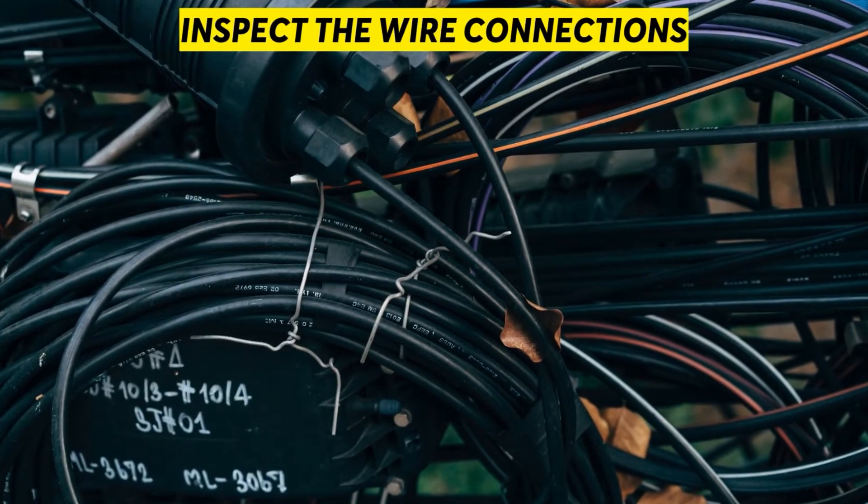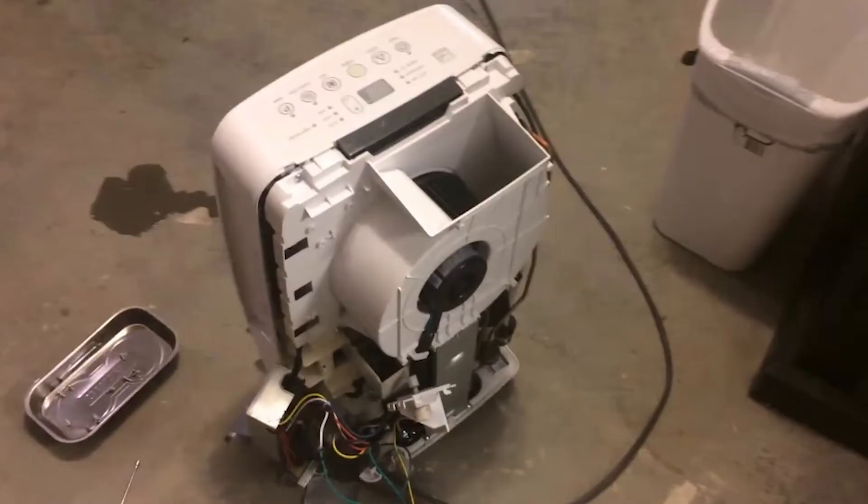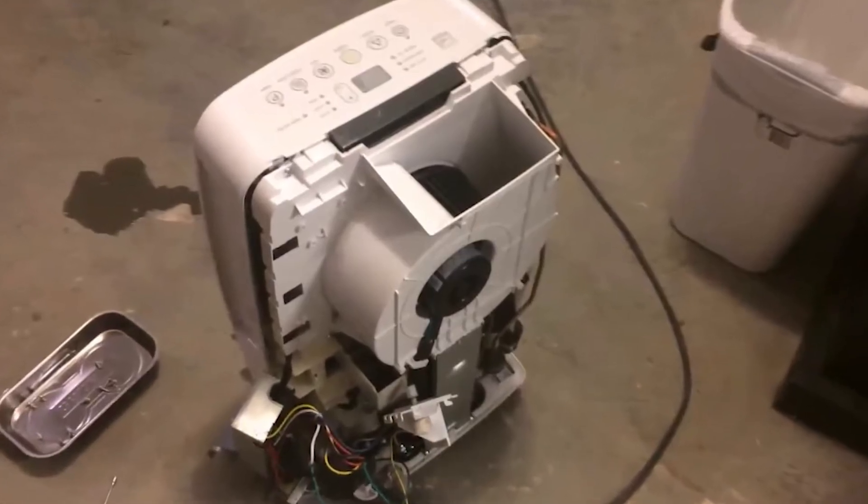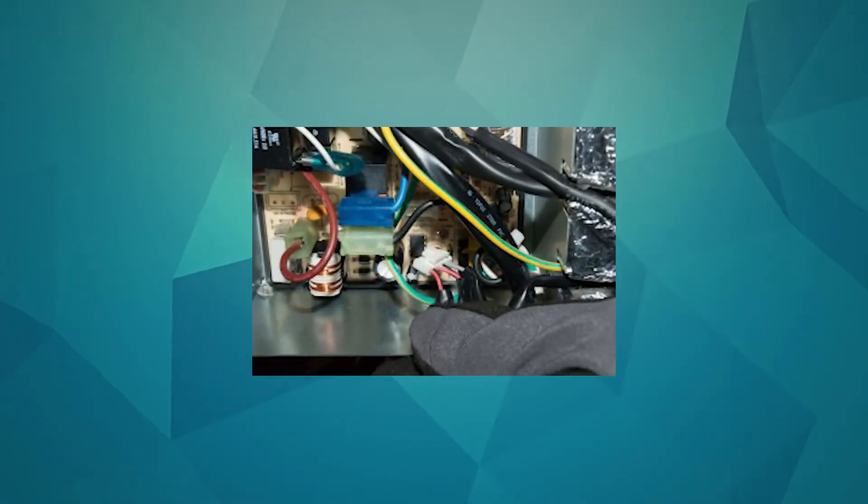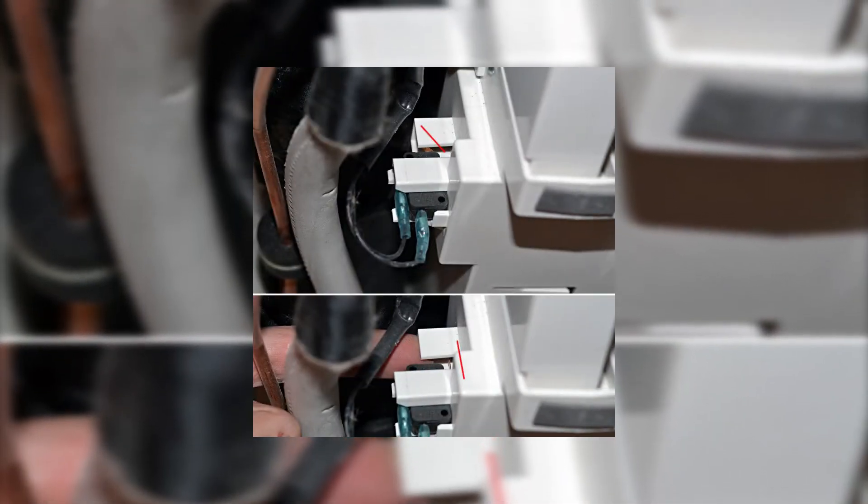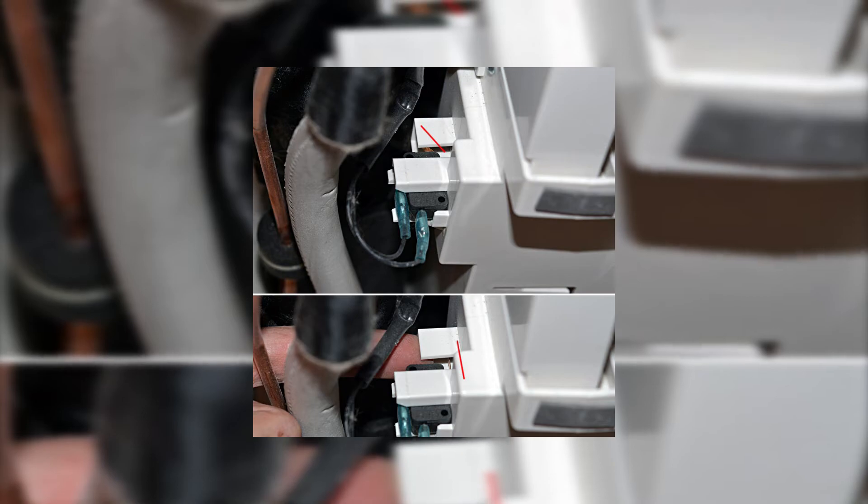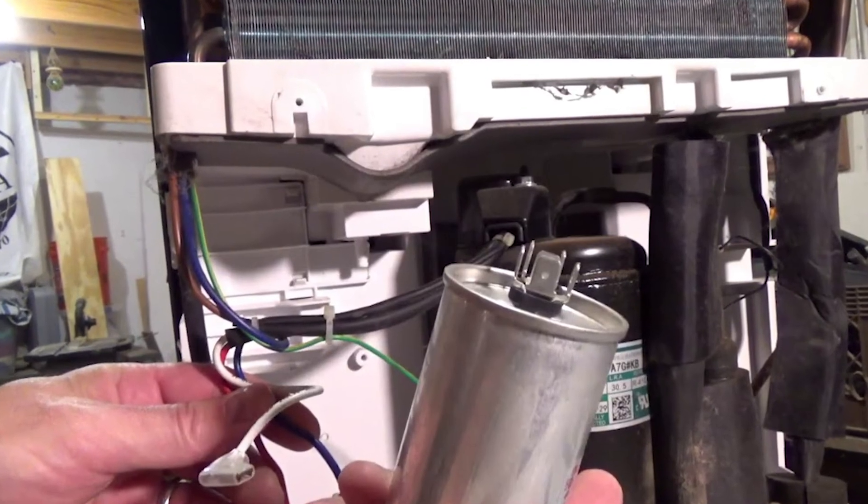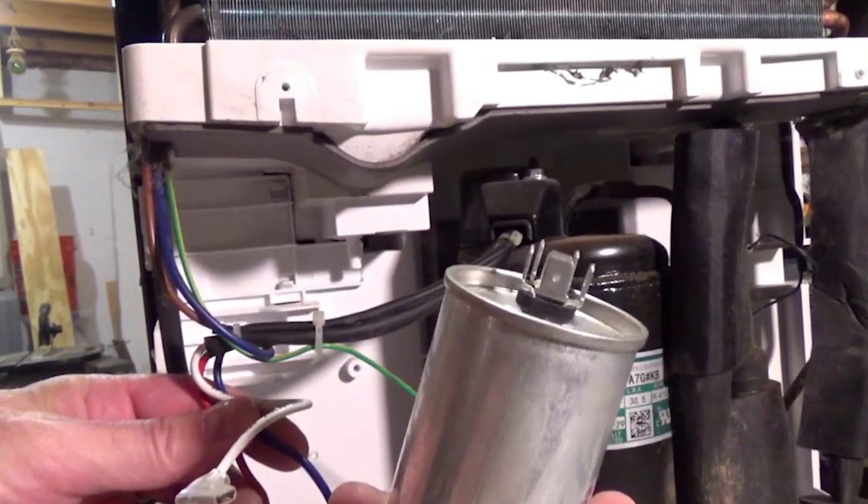Inspect the wire connections. If you find the humidity sensor is not the problem, check the wire connections. Carefully inspect each wire and ensure they are well secured. Open the terminal blocks and check the pins. If bent, it could be the cause of the malfunction. If the pins are perfect, the wire connection is not the problem.